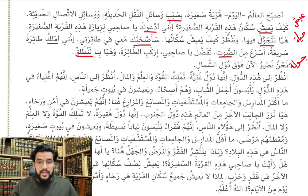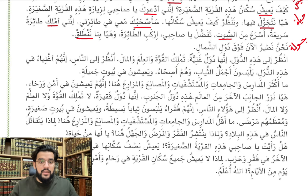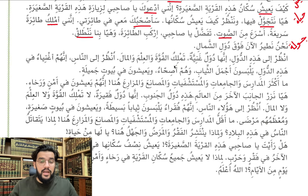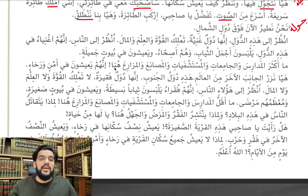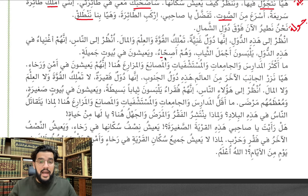نحن نطير الآن فوق دول الجنوب — we are flying now above the southern countries. انظر إلى هذه الدول، إنها دول غنية تملك القوة والعلم والمال — they possess قوة strength, العلم knowledge, and المال money. انظر إلى الناس، إنهم أغنياء، يلبسون أجمل الثياب. وهم أصحاء — أصحاء جمع صحيح means healthy, and the opposite of أصحاء is مرضى.